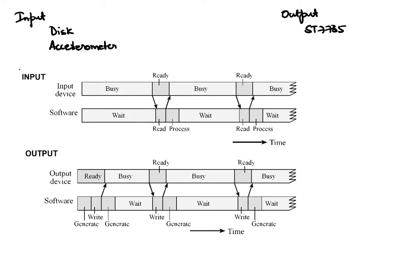Here's what the problem looks like as a timing diagram. For an input device, our software is ready to read at some point but it has to wait because the device is busy. When the device becomes ready, the software reads the data and processes it. After finishing processing, the software is ready to read new data — but the device is not ready because it is still busy producing that data. So we have to wait for it, then once the device is ready we can read and process it.